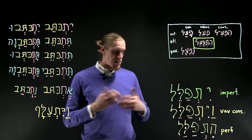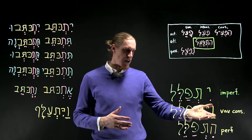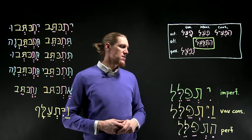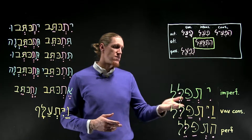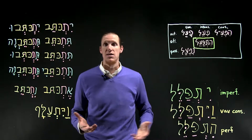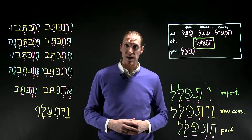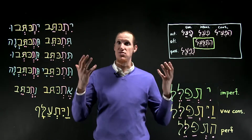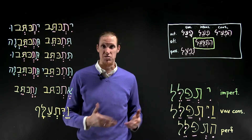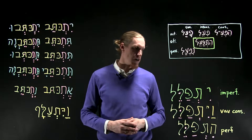It's the exact same form in the vav consecutive — vayitpa'el, vayitpa'el. This is a form that you're familiar with, perhaps from Jonah, when it's the verb 'to pray.' When Jonah prays to God at the beginning of the second chapter of Jonah, vayitpa'el yonah el-adonai.